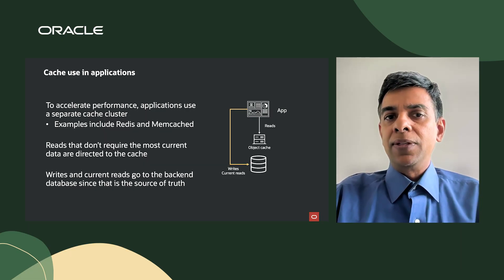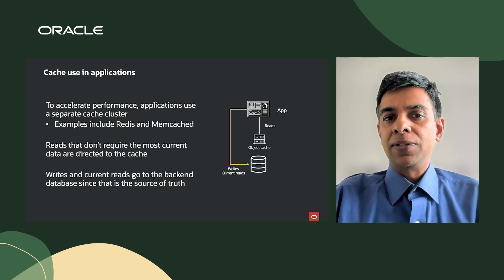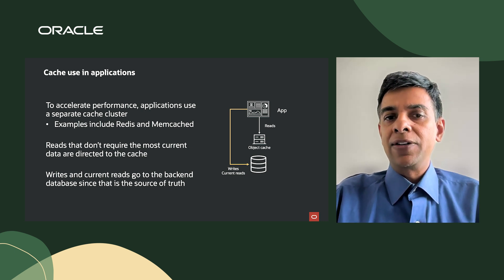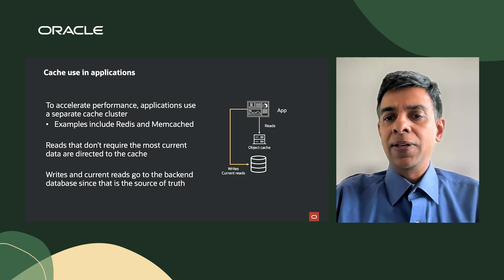Cache use in applications. To accelerate performance, applications typically use a separate cache cluster — examples include Redis and Memcached. Reads that don't require the most current data are directed to the cache. Writes and current reads generally go to the backend database, since that is the source of truth.